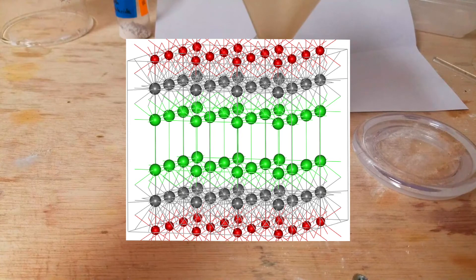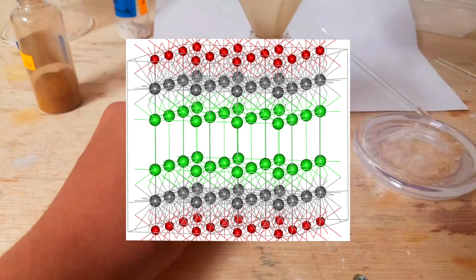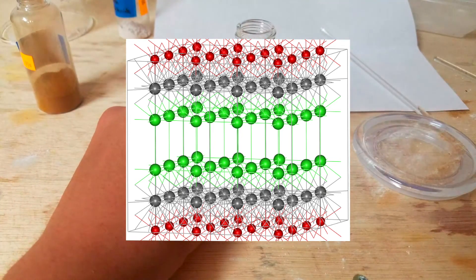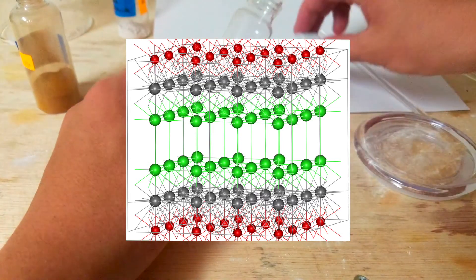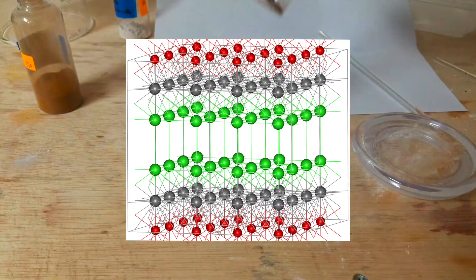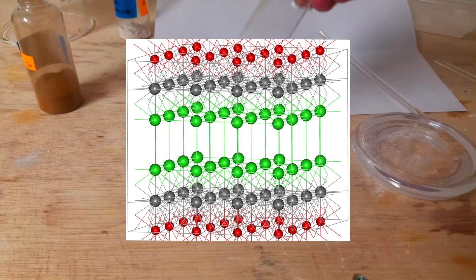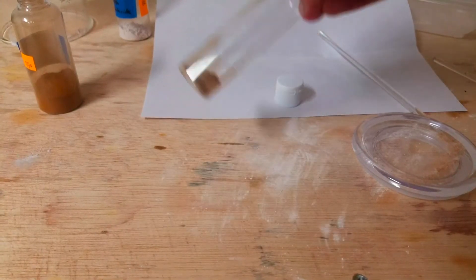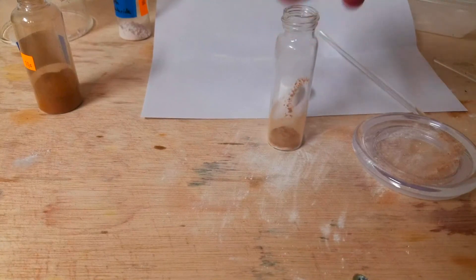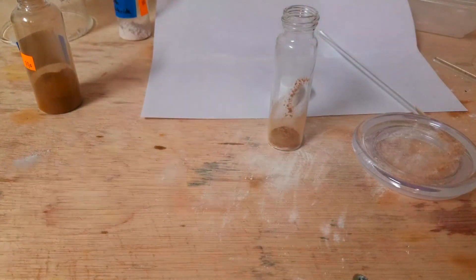Bismuth oxychloride has an extremely interesting structure as it consists of distinct layers of chlorine, bismuth, and oxygen ions. These are ordered chlorine, bismuth, oxygen, bismuth, chlorine, and so on. In the diagram on the screen, the green atoms are chlorine, the grey atoms are bismuth, and the red atoms are oxygen. This very layered structure gives bismuth oxychloride its lustrous physical appearance of the compound. This is the main reason that it is used in most makeups.